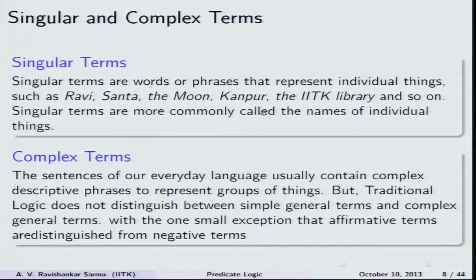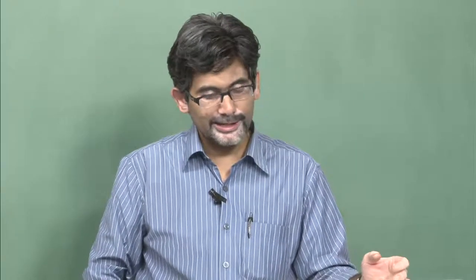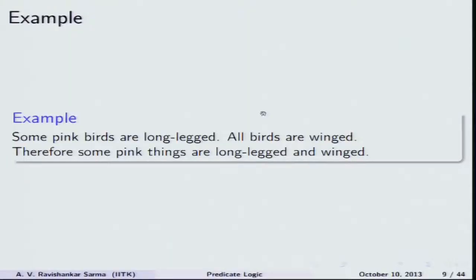Traditional Aristotelian logic does not distinguish between simple general terms and complex general terms — this distinction is very important. With one small exception, it distinguishes between affirmative and negative terms, but it fails to distinguish between singular terms such as Ravi, Sita, moon, or Kanpur, and complex phrases used in day-to-day discourse. There is no way to distinguish between singular and complex terms, and there are lots of examples where propositional logic also fails to explain these things.